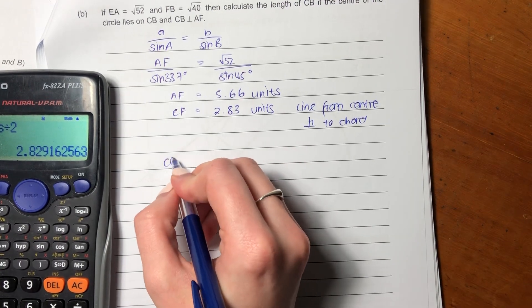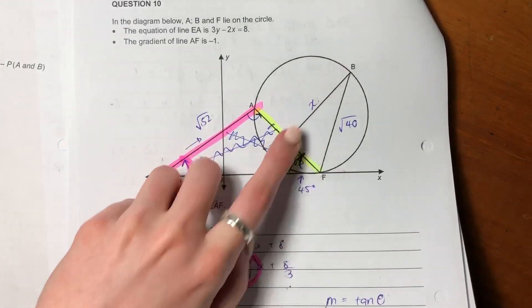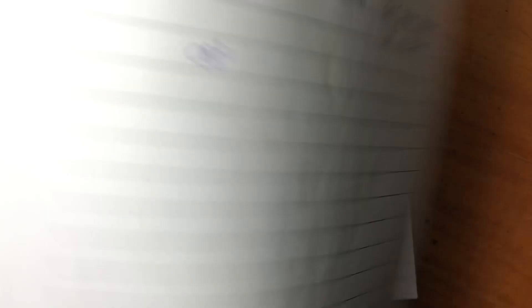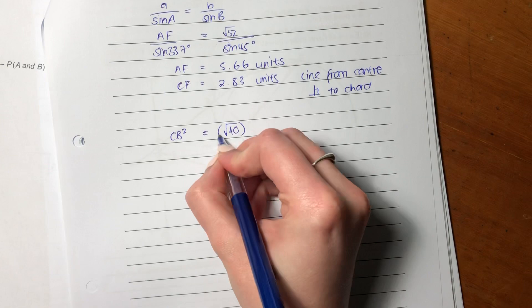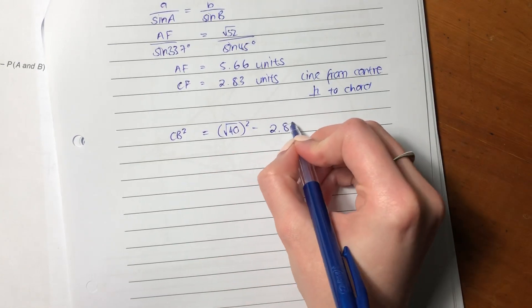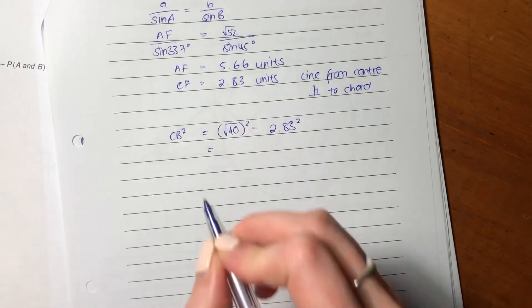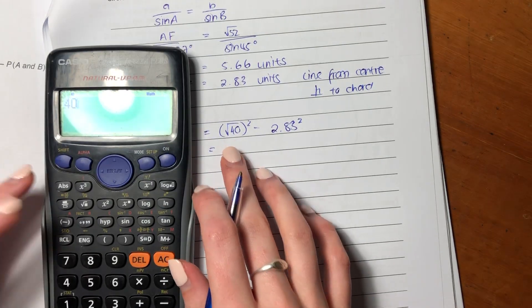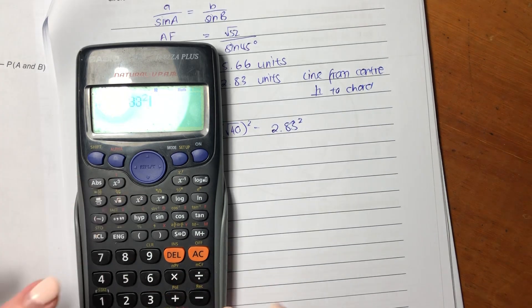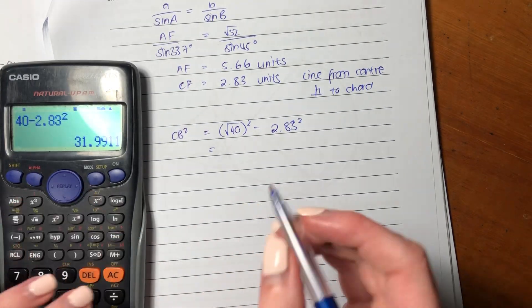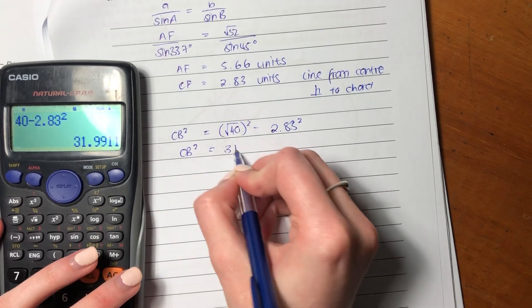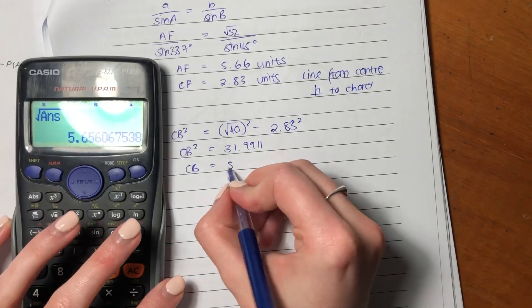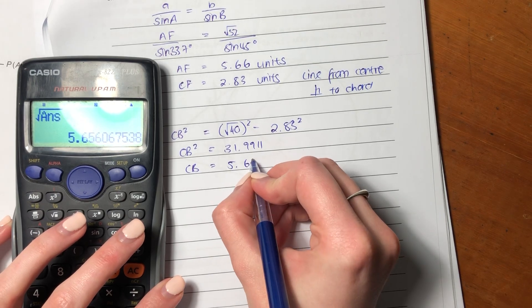So now we've got CF. So now we want to find CB. So CB is going to be the square root of 40 squared minus that length. That's just Pythag. Minus 2.83 squared. So it's just going to be 40, because square root of 40 squared is 40, minus 2.83 squared. So CB squared is 31.9911. So CB is 5.66 units.